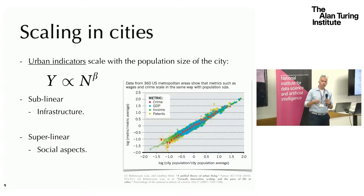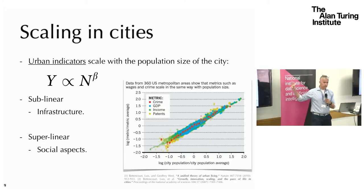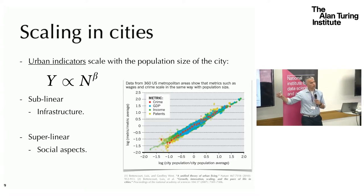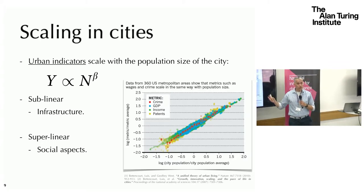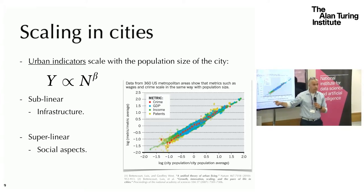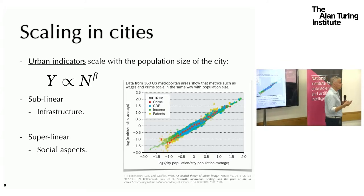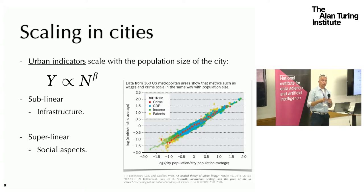We want to look at scaling and dynamics — scaling, concentration, dynamics. There's seminal work from Bittencourt that says there are a lot of urban indicators that scale with populations. We wanted to see if crime — the concentration of crime — also grows with the population. Generally, Bittencourt argues that there are two categories: infrastructure grows sub-linearly with population size, and social aspects like creation of patents grow super-linearly.